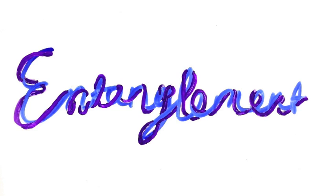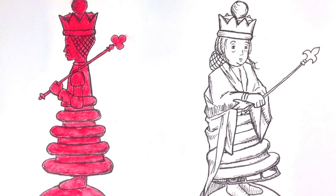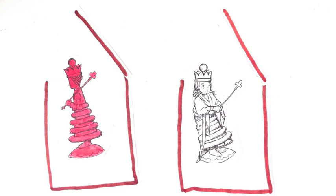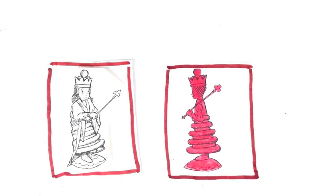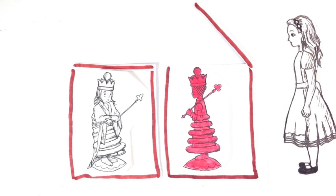Entanglement isn't actually something limited to quantum. Consider this example. You have two objects, one red and one white. You put them into boxes and shuffle them around.